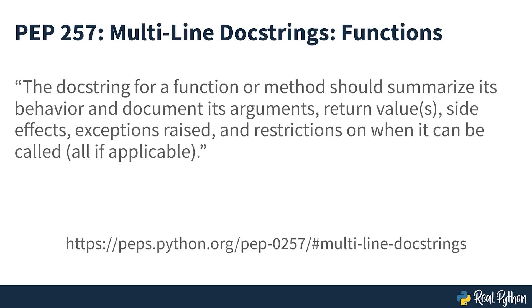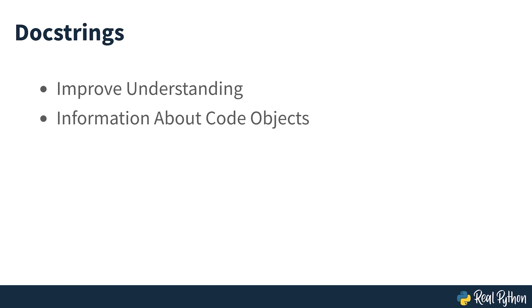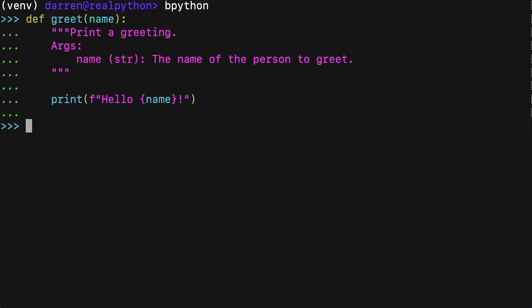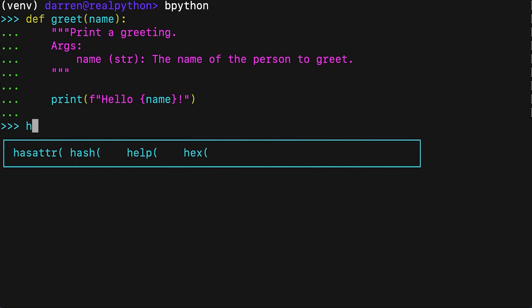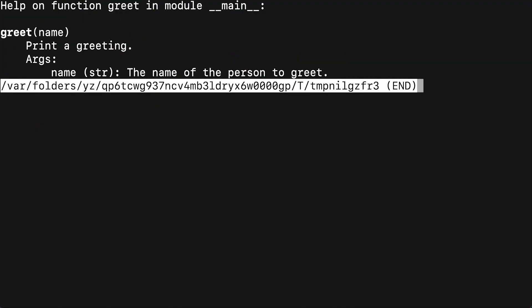As seen in the excerpt from the docstrings convention PEP, which is linked to on screen, docstrings can help to make the code that you're working with easier to understand. They provide information about code objects, and if you write them well, they will clarify the context and use of an object. You can access the information saved in the docstring using the built-in help function. If you call help on any code object, then Python will print the object's docstring to your terminal.